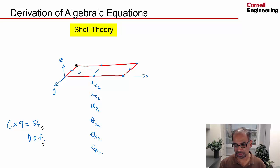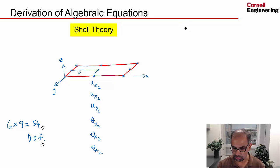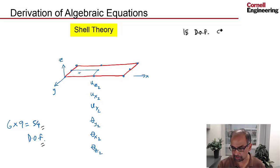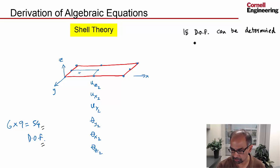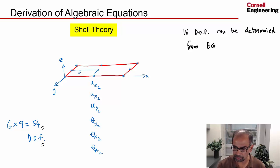We have 6 plus 6 plus 6 — 18 degrees of freedom, of which 9 are displacements and 9 are rotations. In this particular simplified scenario, 18 degrees of freedom can be determined from the boundary condition, specifically the displacement constraint — the essential boundary condition. Which means we are left with 54 minus 18, that is 36 degrees of freedom.